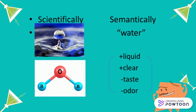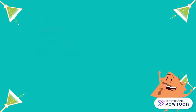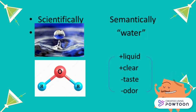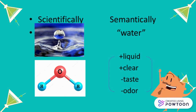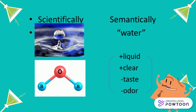Each constituent feature forming the meaning of a word is called a semantic component or semantic feature. A word is composed of a combination of meanings; for example, water is conceptually defined as a substance that is in the state of a clear liquid with no taste and no odor.